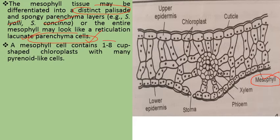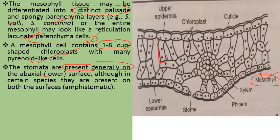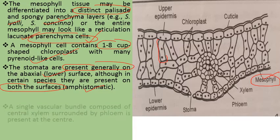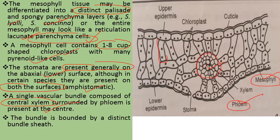Stomata are generally present on the adaxial — lower — surface, though in certain species they are present on both surfaces; these are called amphistomatic leaves. A single vascular bundle composed of central xylem surrounded by phloem is present in the center of the leaf, bounded by a distinct bundle sheath.